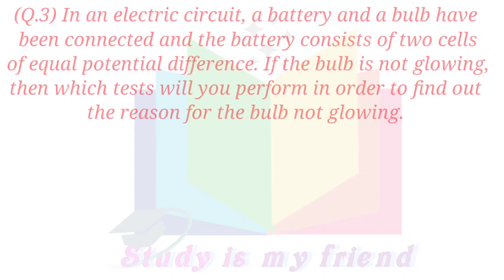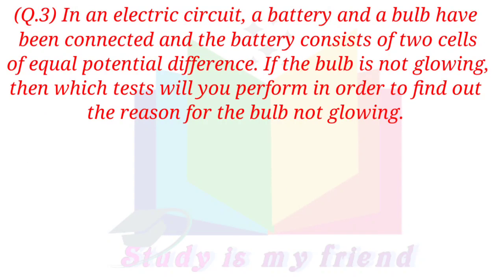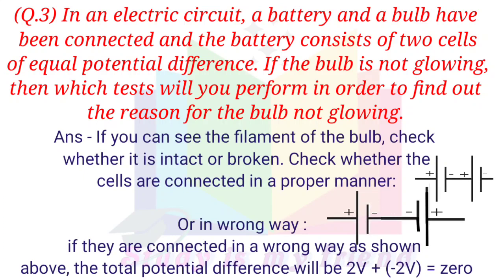Question 3. In an electric circuit, a battery and bulb have been connected and the battery consists of two cells of equal potential difference. If the bulb is not glowing, then which tests will you perform in order to find out the reason for the bulb not glowing? Answer. If you can see the filament of the bulb, check whether it is intact or broken.